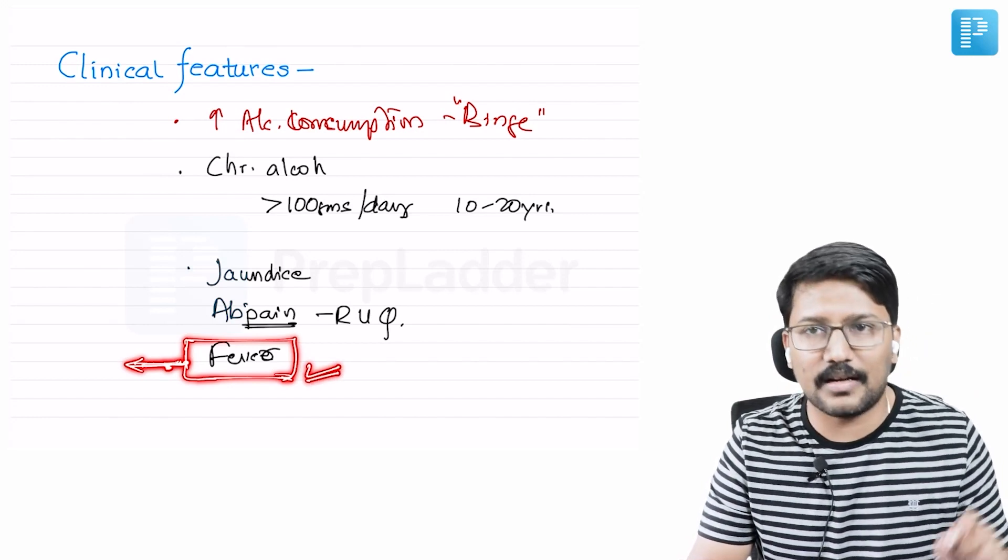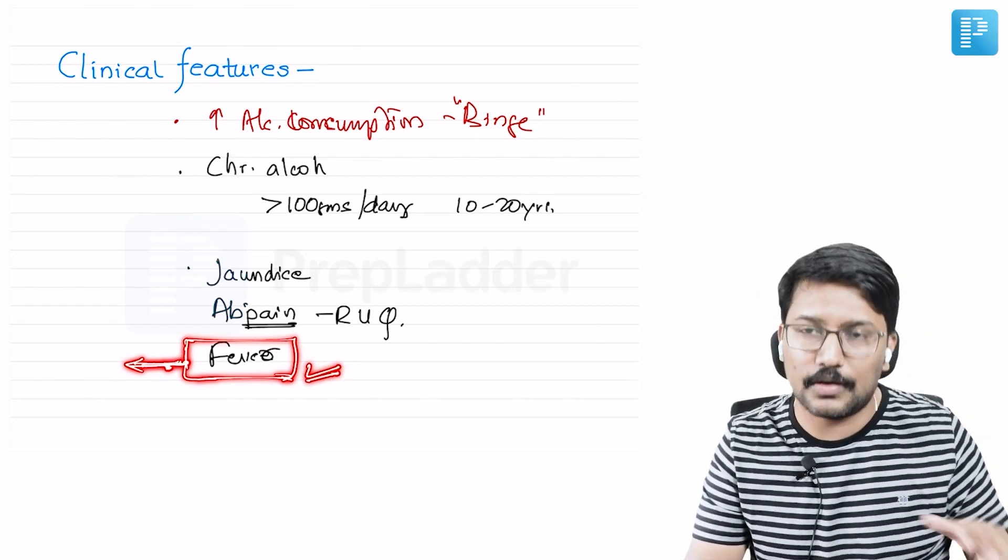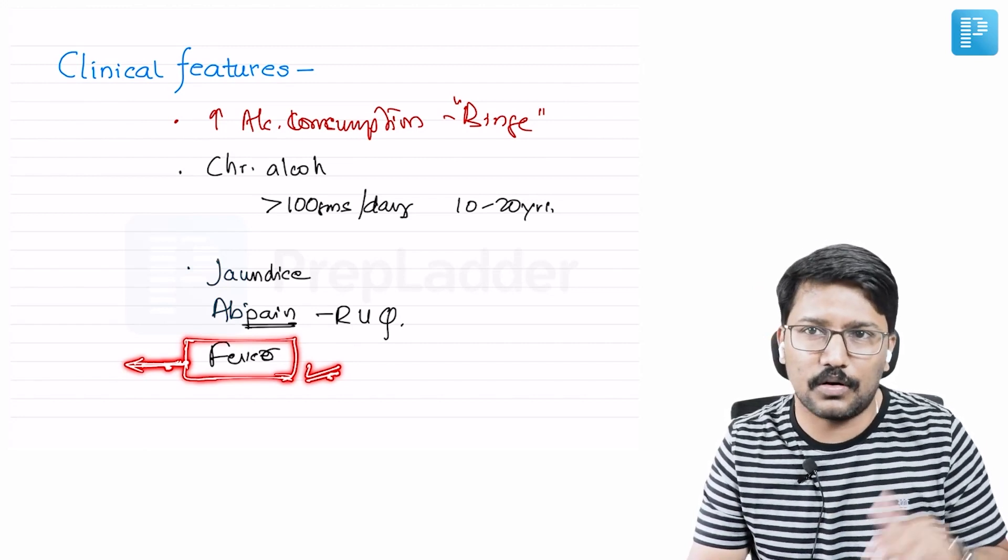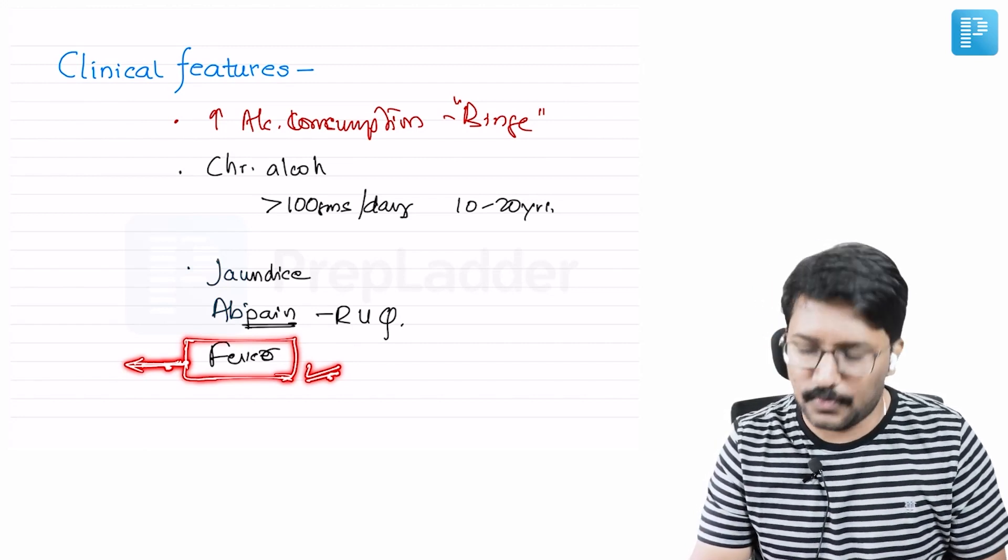So fever will be considered to be secondary to alcoholic hepatitis in a case of alcoholic hepatitis when you have ruled out other possible causes. The infections and all are ruled out, then you will attribute it to alcoholic hepatitis.